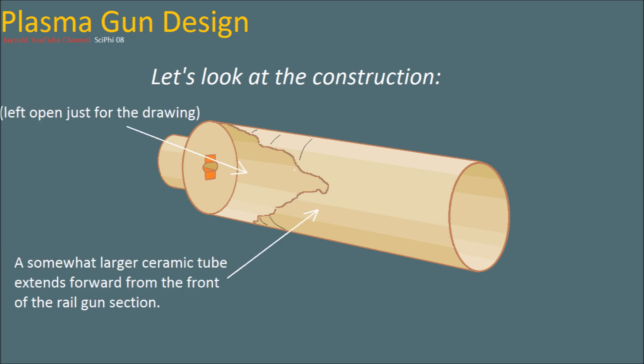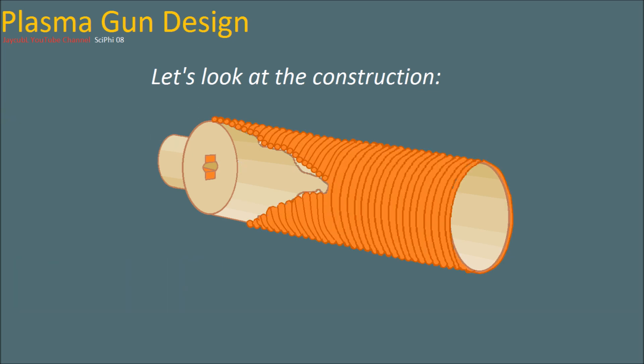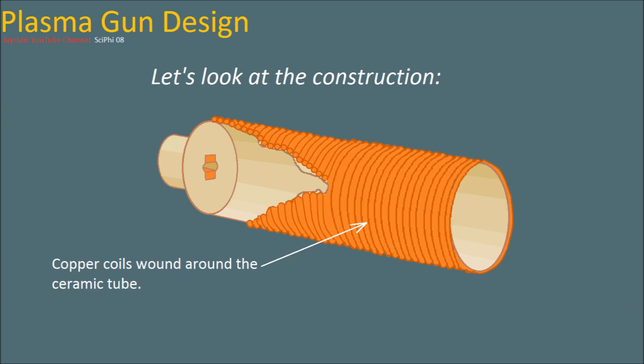In front of that, the larger main ceramic tube extends out in front. The coils of the linear induction motor are wound over the top of the main ceramic tube, insulated copper wire coils.